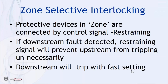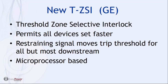In a recent presentation from GE, we learned about a new feature called threshold zone selective interlocking. It's different in that it permits all devices to be set faster, and then the restraining signal moves the trip threshold for all but the most downstream breaker. Because it's microprocessor-based it can react very quickly to a fault. It takes advantage of something often considered a drawback in many breakers and uses it to their advantage — which is quite clever.